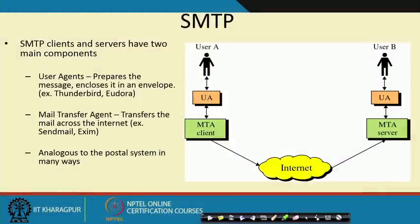The client over the network can interact with the server at port 25. SMTP clients and servers have two major components: a user agent that prepares the message and encloses it in the envelope — popular agents include Thunderbird, Eudora, and others — and a mail transfer agent (MTA) that transfers the mail across the internet. This is analogous to our postal system. The MTA is the client, and there is a corresponding MTA server and user agent at the other end.